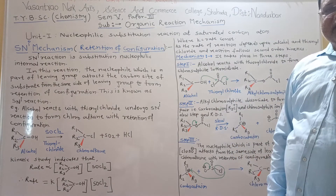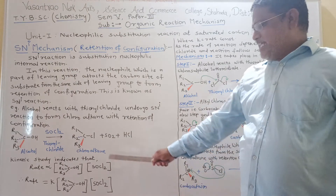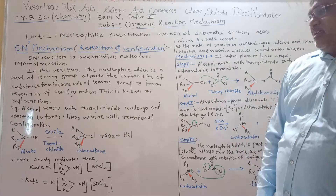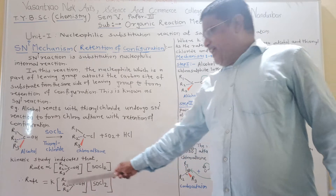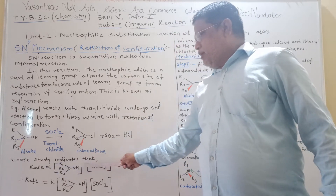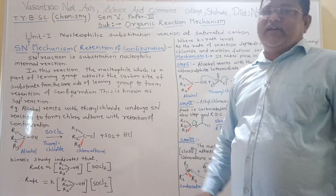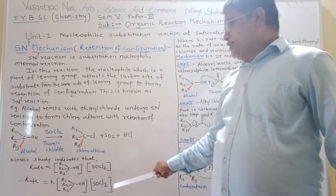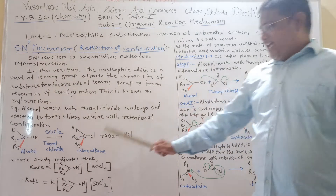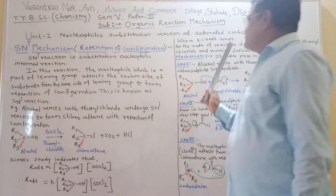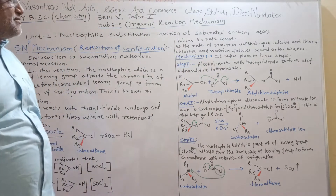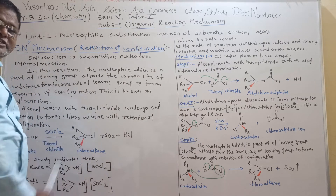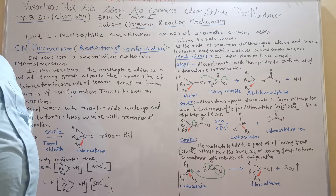In the SNI mechanism, in the slow step, alcohol as well as thionyl chloride takes part in the slow step, called the rate determining step. Therefore, kinetics study indicates that the rate of this reaction is directly proportional to the concentration of alcohol and the concentration of thionyl chloride. So, rate = K[alcohol][thionyl chloride], where K is the rate constant. As the rate depends on both concentrations, it follows second order kinetics.